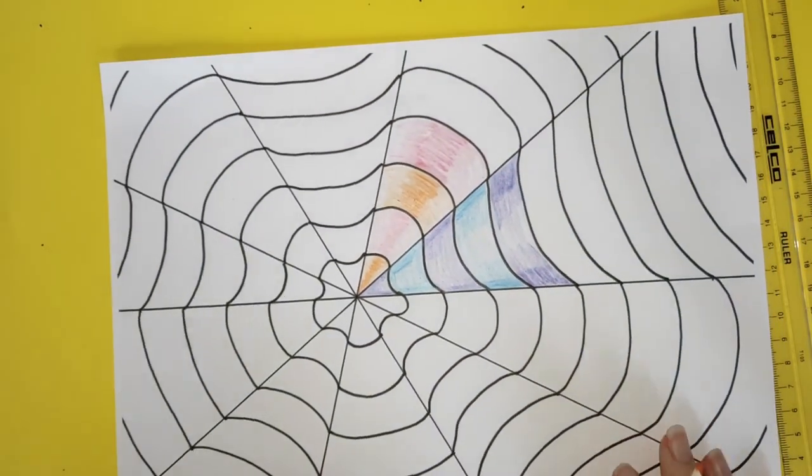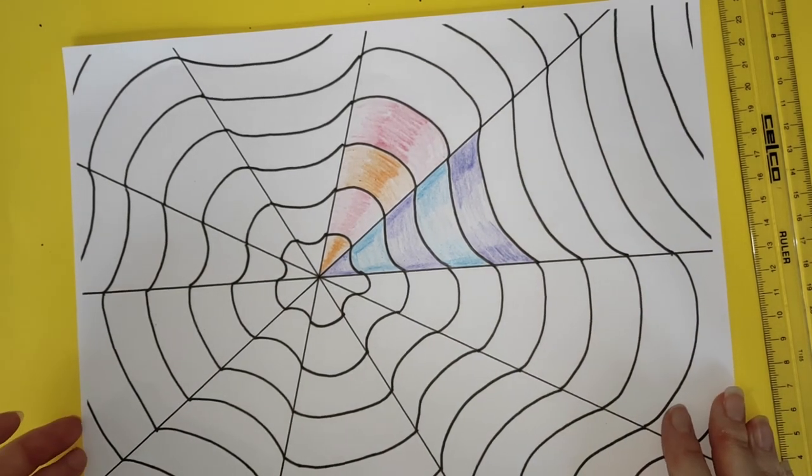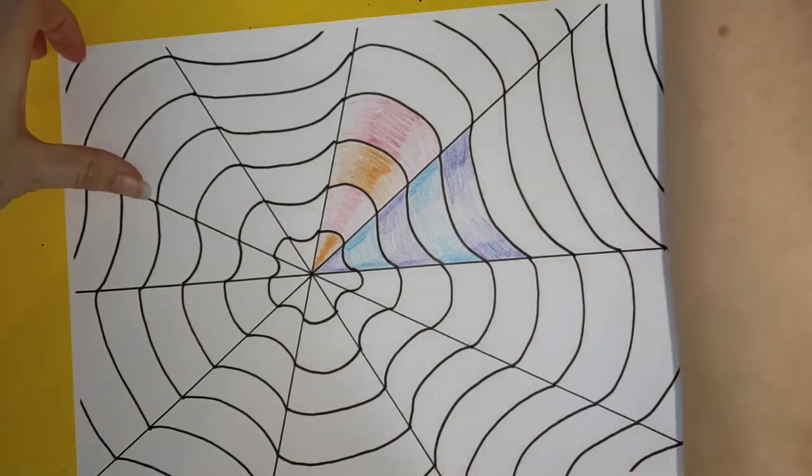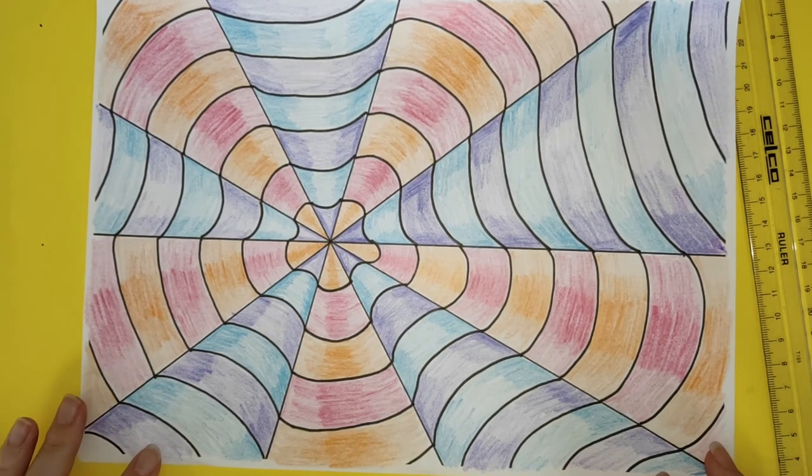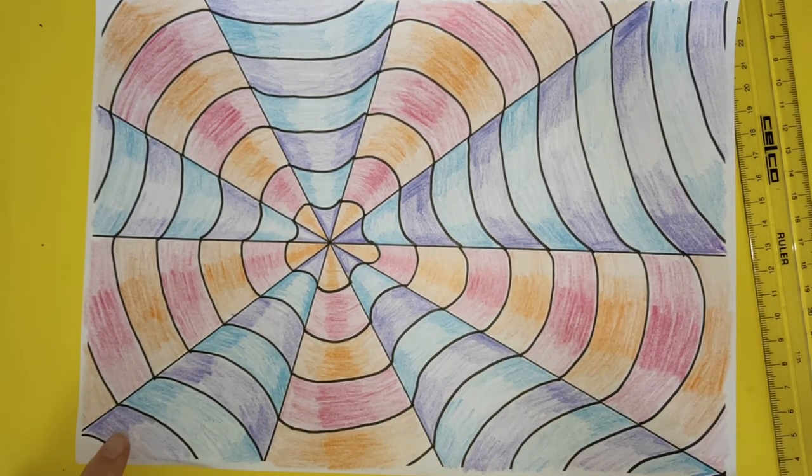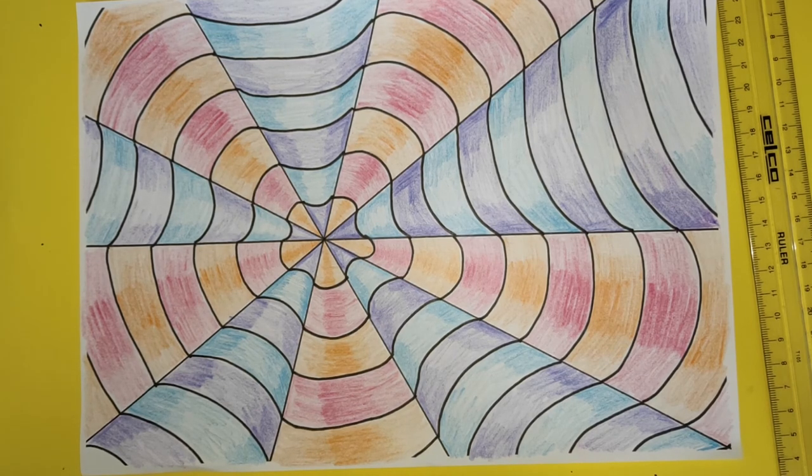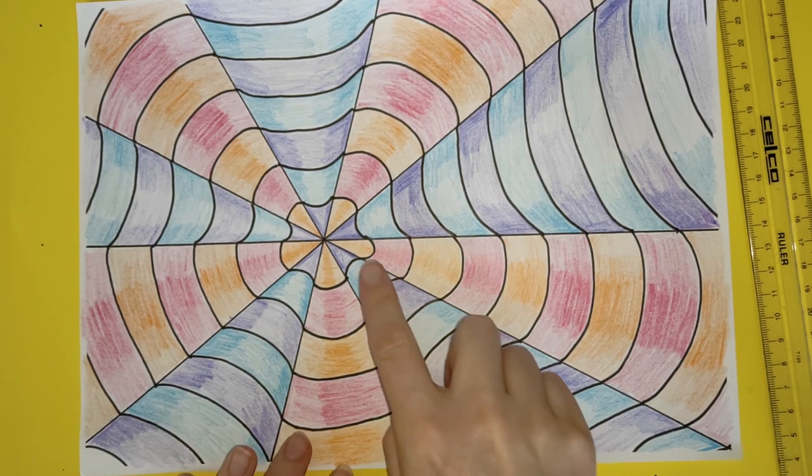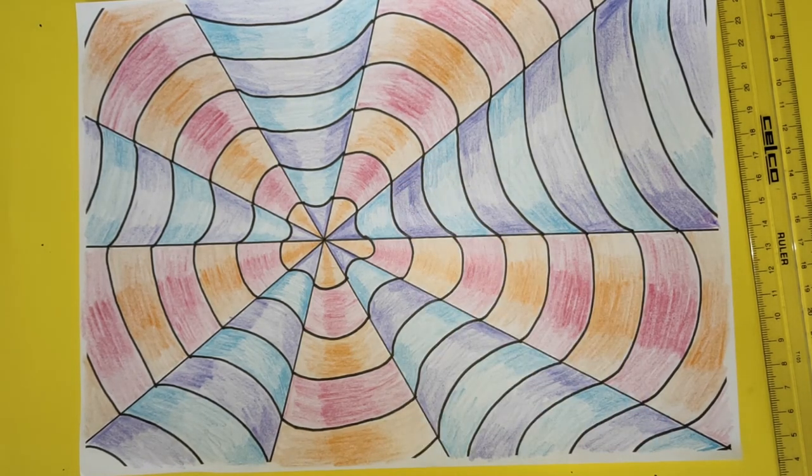Alright, so you can see already that's starting to develop. Rather than sitting there and watching me color in for the next 10 to 15 minutes, I'll show you the one that I did last night. So that is how it could turn out at the end. Of course, you can choose different colors. Even using just a black pencil, maybe on every second one, but still using that same effect would definitely make it look three-dimensional as well.